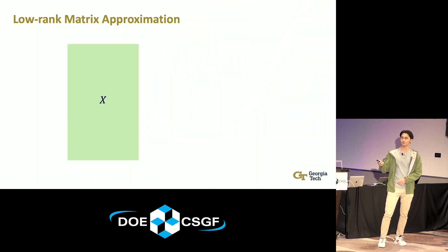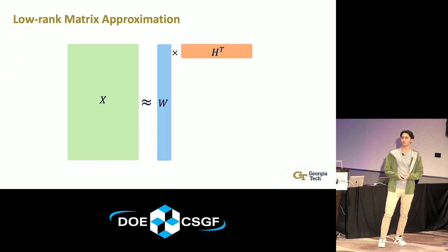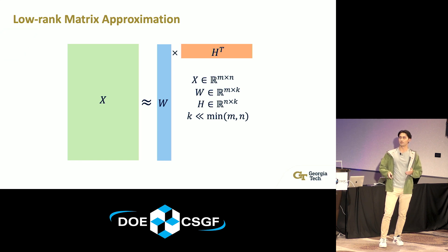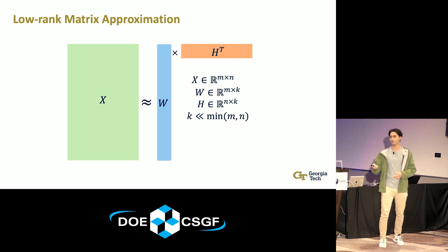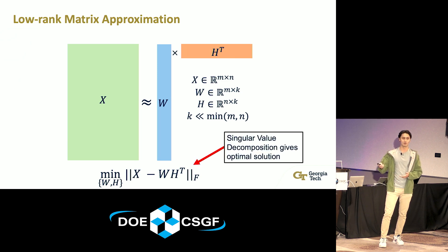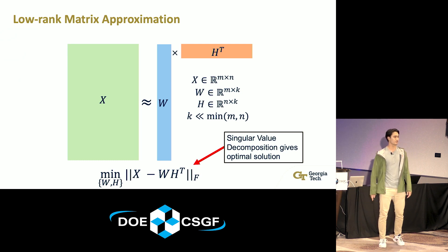So what is it? Given a matrix X, probably some data matrix, you're going to try to approximate it with two smaller matrices W and H. X is M by N; W and H share the corresponding row dimensions with X, and then have some smaller dimension K — that's the low-rank part. K is usually much smaller than either M or N. Mathematically we write the objective function using the Frobenius norm, and this is minimized by the singular value decomposition, or SVD.